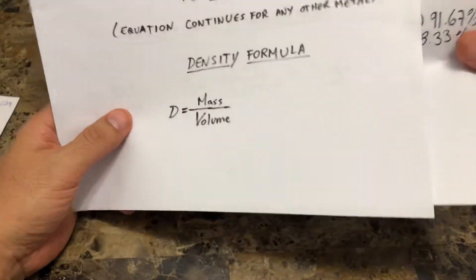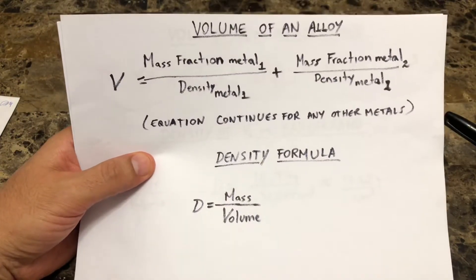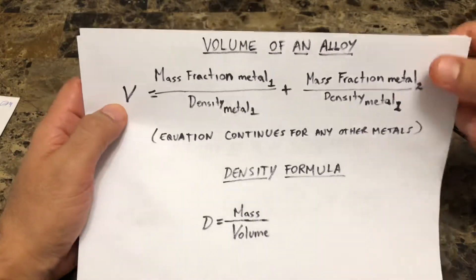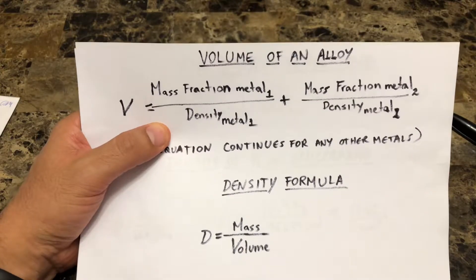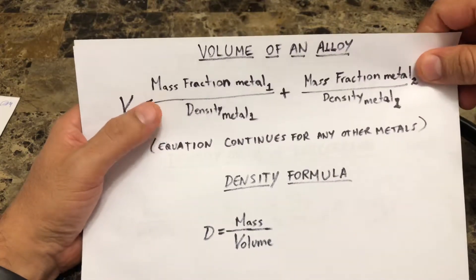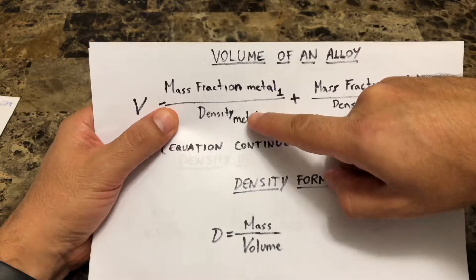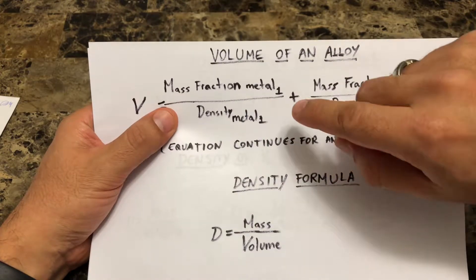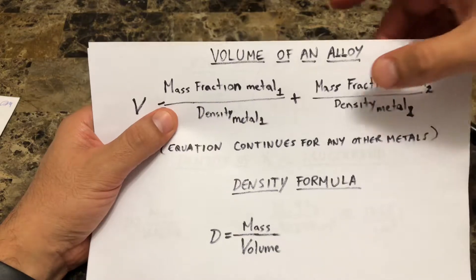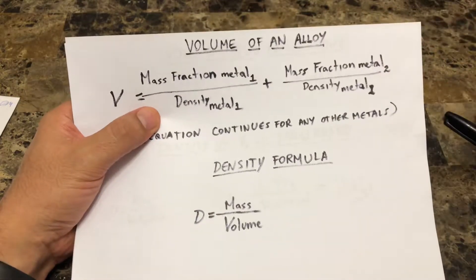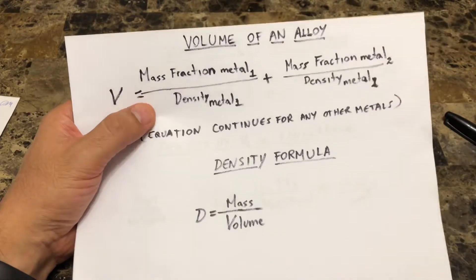So how do we determine the volume of an alloy? All we have to do is use this equation: the volume equals the mass fraction of the first metal divided by the density of that metal, added to the mass fraction of the second metal divided by the density of the second metal. If you had a third or fourth metal, you would just continue adding terms for those additional metals.